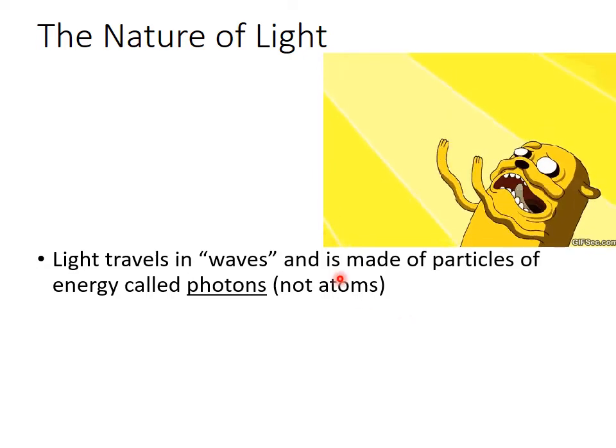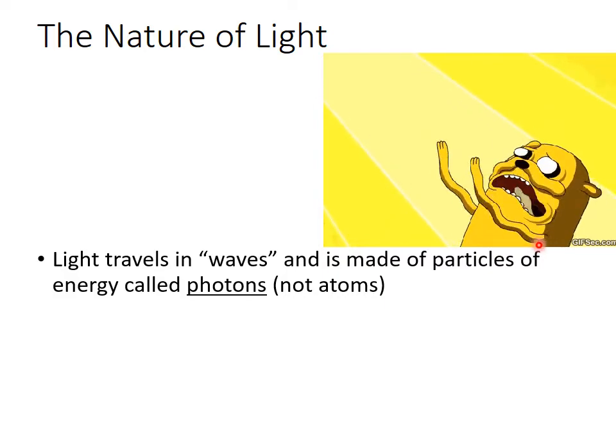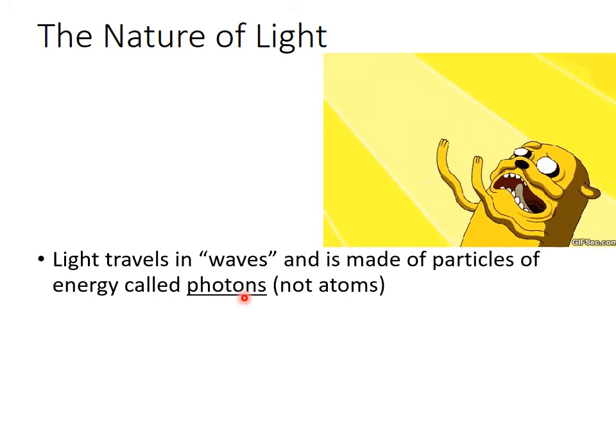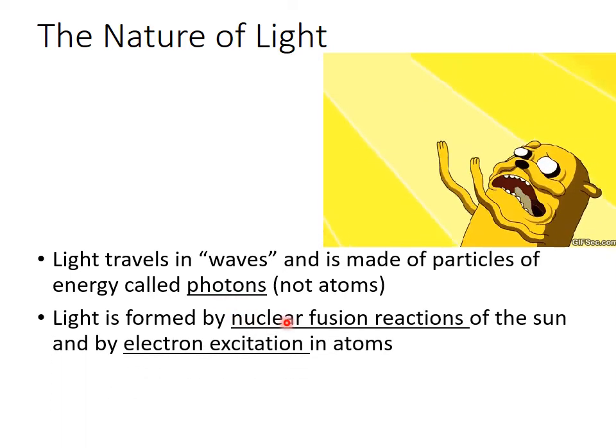Another characteristic of light is that it moves in waves, kind of like the arms on this cartoon character. Instead of light just traveling from one point to another in a straight line, it actually moves in an up-and-down pattern called waves. A particle of light has a special name—it's called a photon. There are no atoms in light.